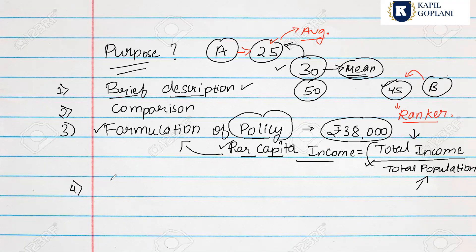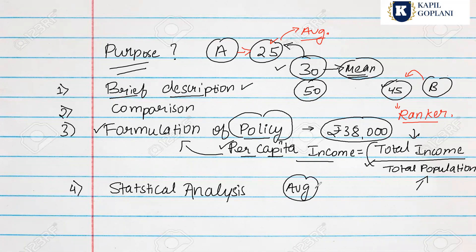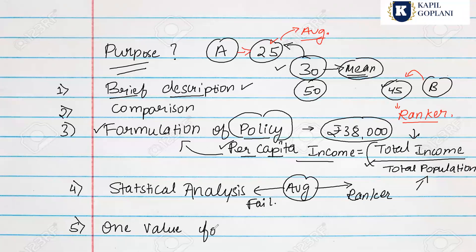Fourth purpose is statistical analysis — averages help to rank students and determine pass or fail based on average marks. The fifth point is that one value represents all: a single value like mean, median, or mode represents the whole dataset.